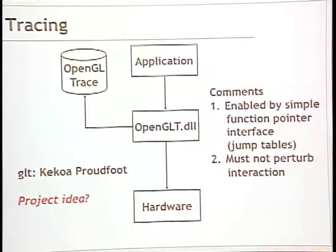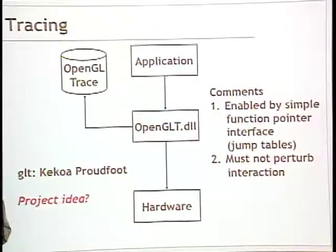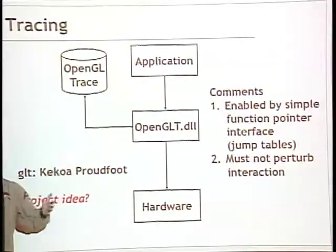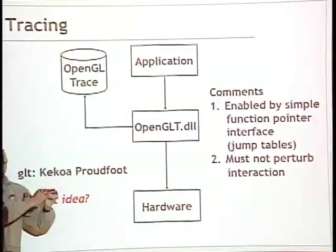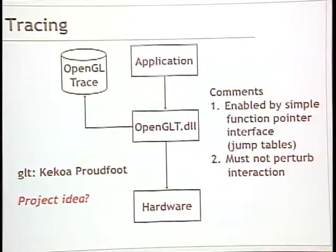What he did was create his own library that just redirected all those calls. So it calls his own function, which then calls the regular system call, but he can do other stuff in between. Any of you can build your own OpenGL library and make it do whatever you want. That's really handy for a number of reasons. What he was interested in doing was capturing a trace — just watching all the OpenGL commands stream by and making a big list of them. What's actually being called?